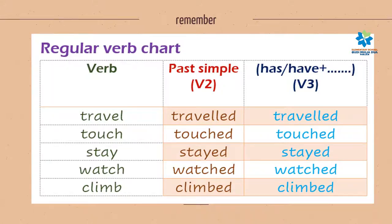The first table is the regular verbs. We have five verbs: travel, touch, stay, watch, and climb. To talk about experiences using Have You Ever, we use the verb on the third column, the blue words. For the regular verb, we just add "-ed" at the end of the words.